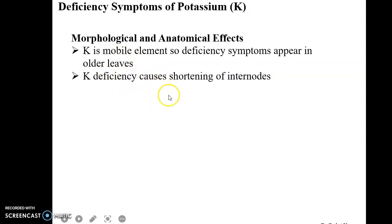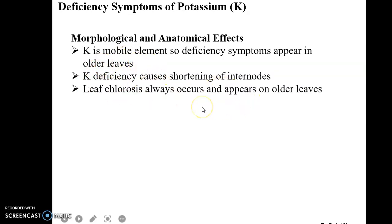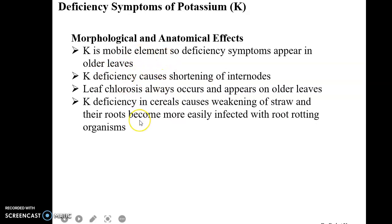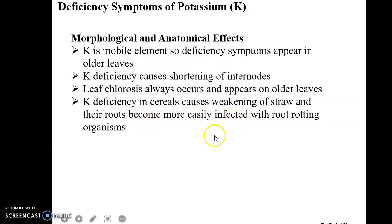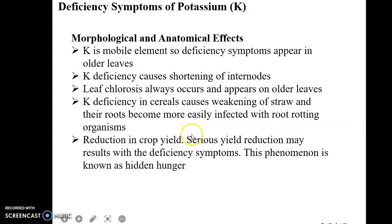Potassium deficiency also causes the shortening of internodes. Leaf chlorosis is always associated with potassium deficiency. In cereals, if there is a deficiency of potassium, the straw and their roots will be weakened and will be easily infected with rotting organisms.